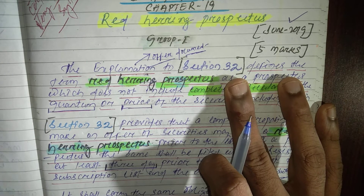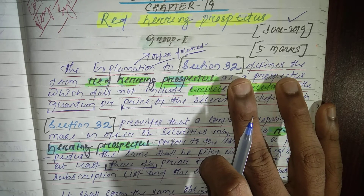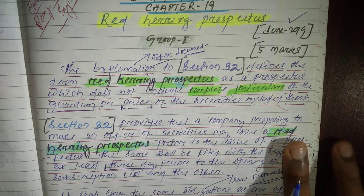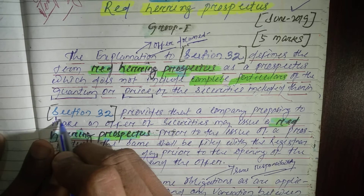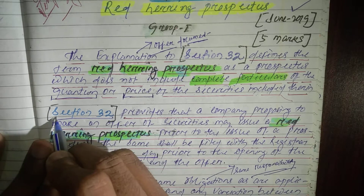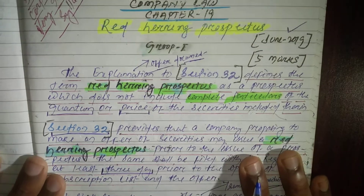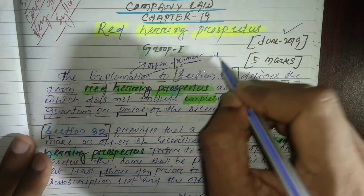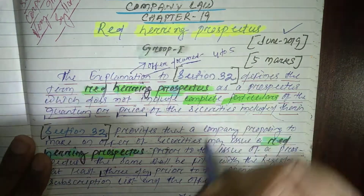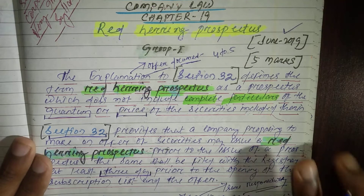It also explains how the company aims to use the money that will be raised, and the possible risks for investors. Remember Section 32, which explains about Red Herring Prospectus. This is very important and very easy — you just need to practice it a minimum four to five times for better understanding.